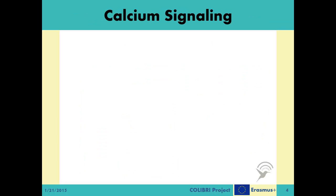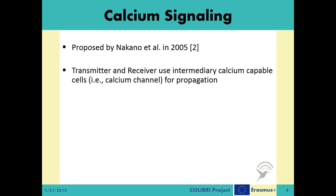Inspired by this ion-based diffusion system called ICW, Nakano et al. have proposed a molecular communication system called calcium signaling in their 2005 paper. The system is composed of the transmitter, the intermediary calcium channel, and the receiver. Considering the ICW system explained previously, the transmitter and the receiver are external devices, while the channel is composed of cells that exhibit ICW-like capabilities.